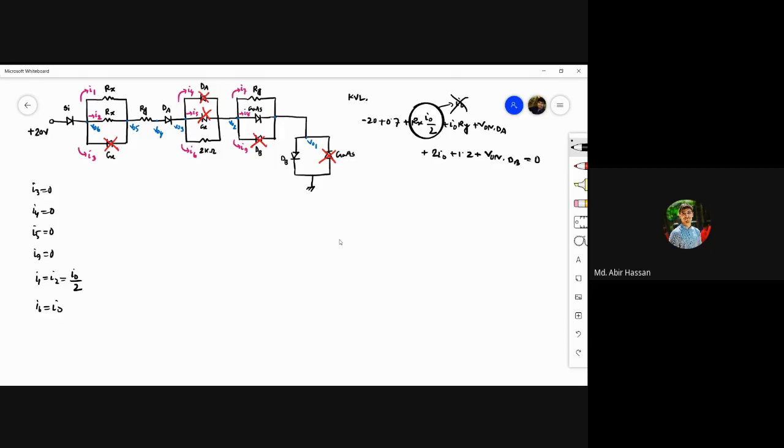Now, i8 equals 1.2 by 1. i8 minus i6 is 1.2. And i8 equals i0 minus i6.